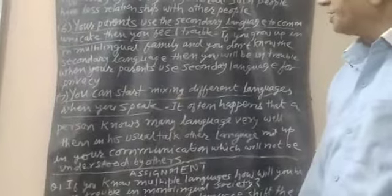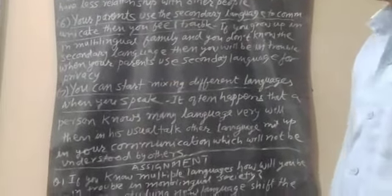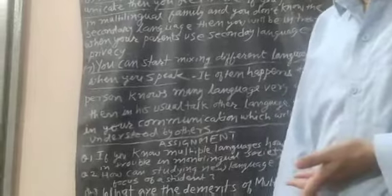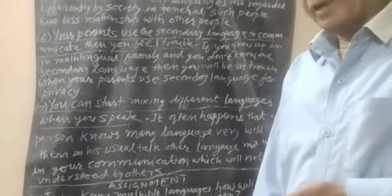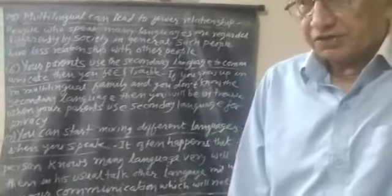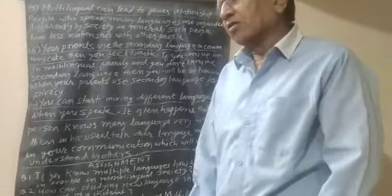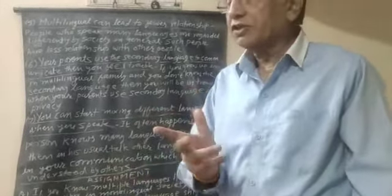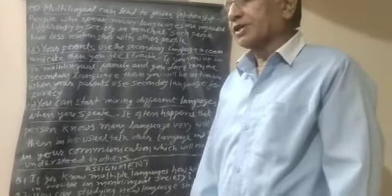Sixth point: your parents may use a secondary language to communicate that you don't know. If your family is a multilingual family and all members know the other language but you don't, then for privacy your parents communicate in the secondary language and you cannot understand them, which makes you feel troubled and left out.